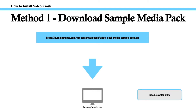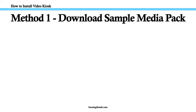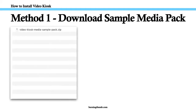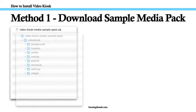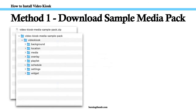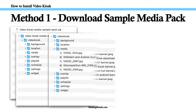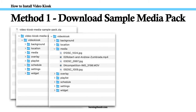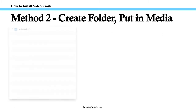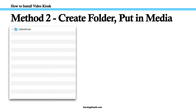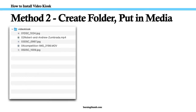The first option is the easiest — just download the sample media pack. It comes with the standard folder layout already created for you, with sample media files already in it. Once you've downloaded and unzipped the sample media pack, just replace the sample media files with your own media files. Method 2: if you prefer, you can create your folder layout on your computer and then put your media files in it.